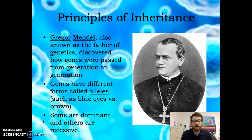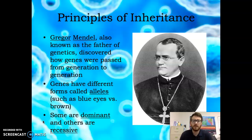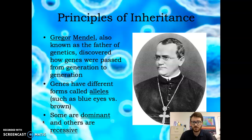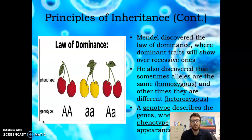Gregor Mendel is the father of genetics. He was a priest in eastern Europe. He discovered that things take different forms, called alleles, and he worked with pea plants. He asked why some pea plants are green and some are yellow. He determined that there were traits that were dominant and traits that were recessive, and these would go on to play a very key role in genetics. Dominant is a trait that comes out, while recessive is a trait that kind of hides away. Recessive only shows when there are other recessive traits; dominant shows whenever it's present. This is called the law of dominance.